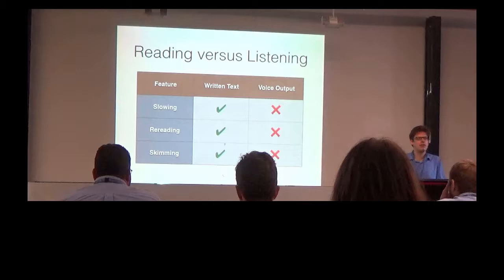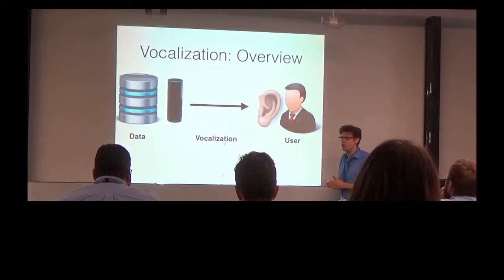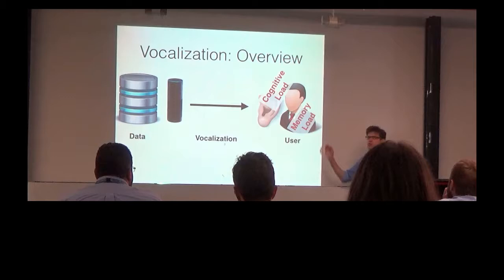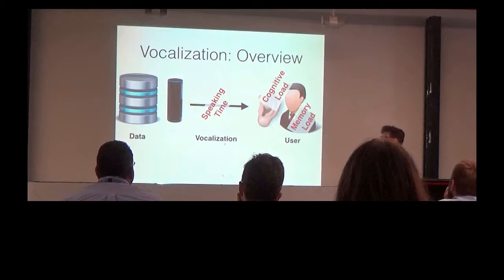So, there are many particularities in voice output, and once we generate voice output, we have to take them into account. First of all, we have to make sure that we don't overburden the user in terms of cognitive load or in terms of memory load. So for instance, we want to generate output of a simple structure that can be understood when listening to it for the first time. Also, we want to put a restriction on the number of things that users have to keep in memory at the same time in order to understand the entire voice output.